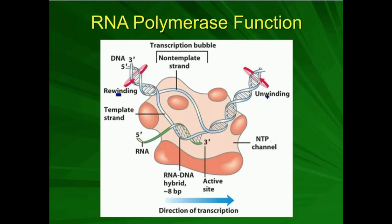Additionally, one of the RNA polymerases — RNA polymerase one — is in a specialized part of the nucleus called the nucleolus, which is the site of most of the ribosomal RNA. Also, for RNA polymerase to work, we have to have plenty of nucleoside triphosphates, or NTPs, which are the substrates for RNA polymerase.